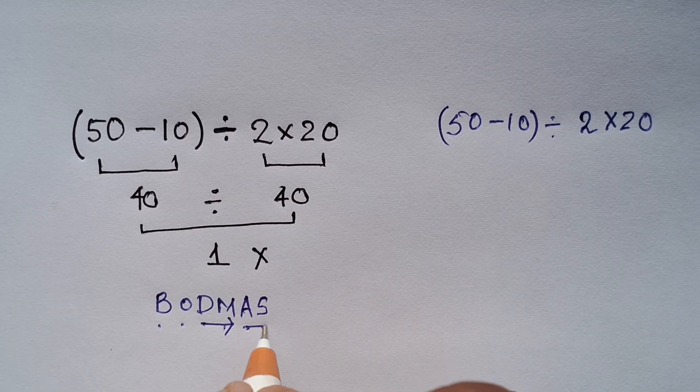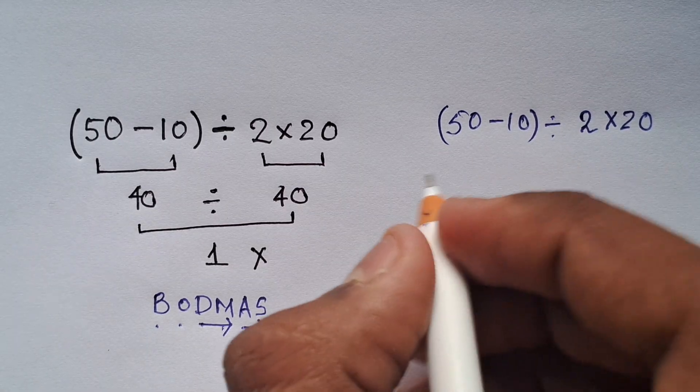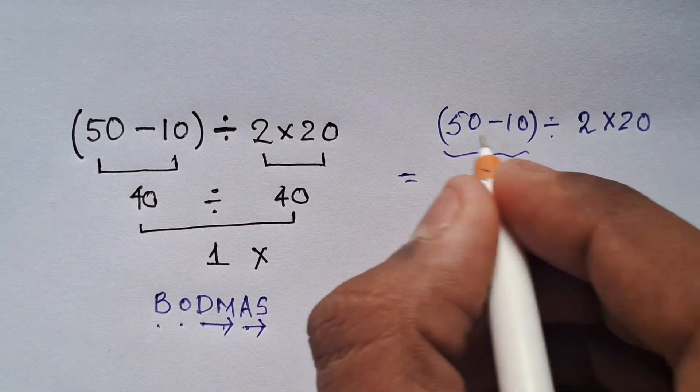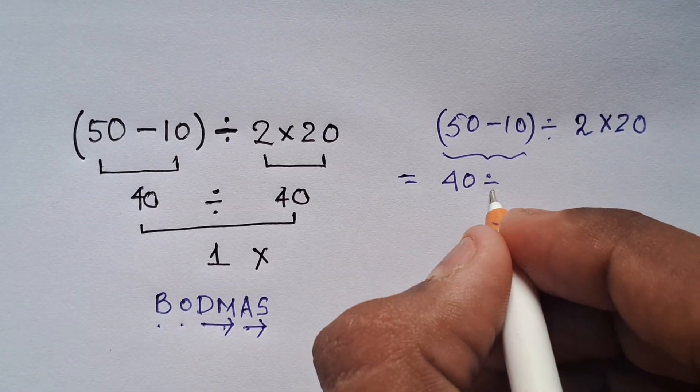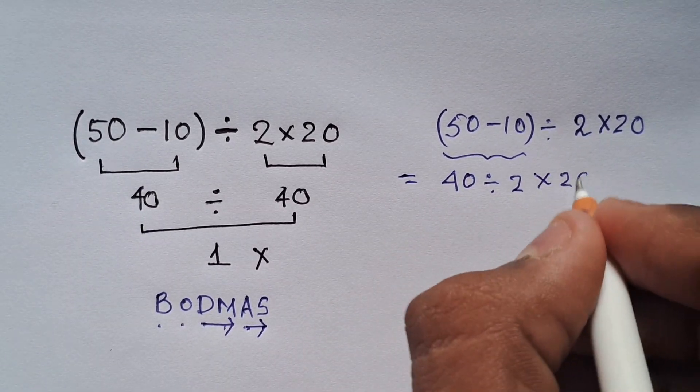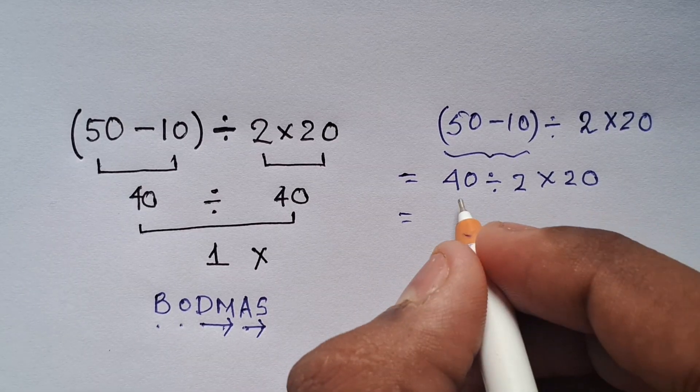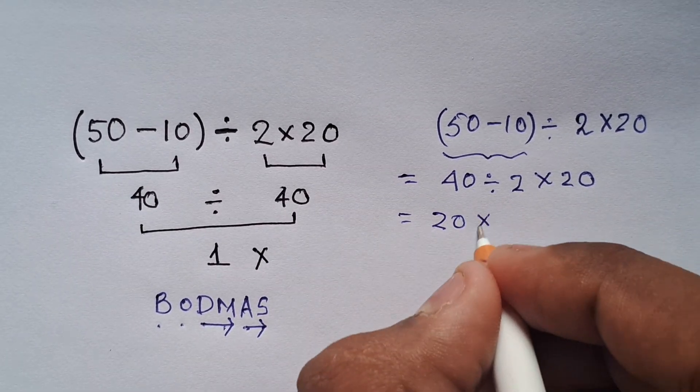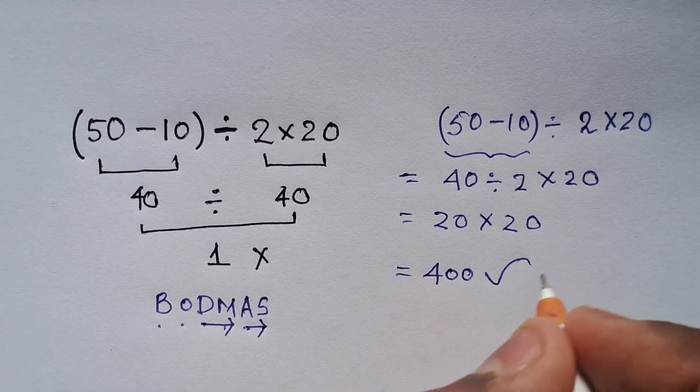Let's solve this expression according to the order of operations. First, 50 minus 10 equals 40, giving us 40 divided by 2 times 20. Instead of multiplying first, we first divide as it comes first. So 40 divided by 2 equals 20, and 20 times 20 equals 400.